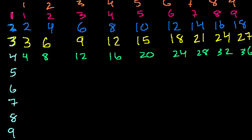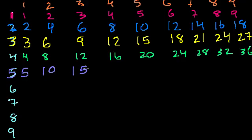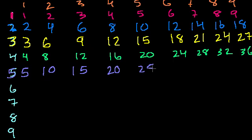5 times 1 is 5. 5 times 2 is 10. 5 times 3 is 15. The 5 times tables are fun — every other number ends with a 5, and every other one ends with a 0. So: 20, 25, 30, 35, 40, 45.